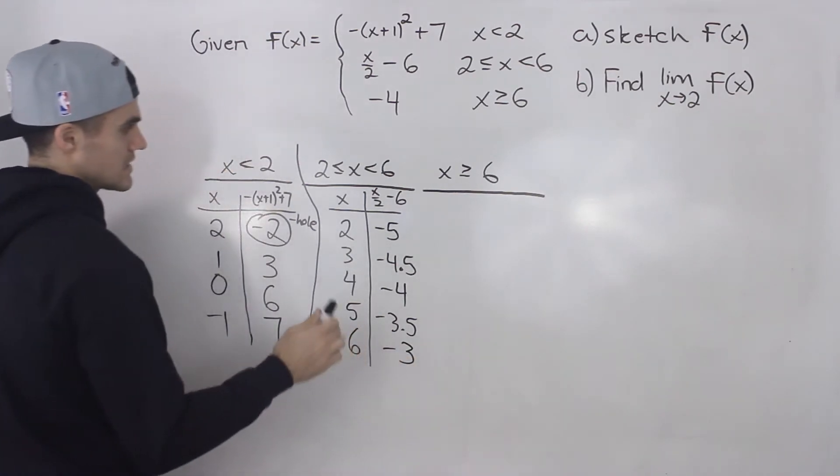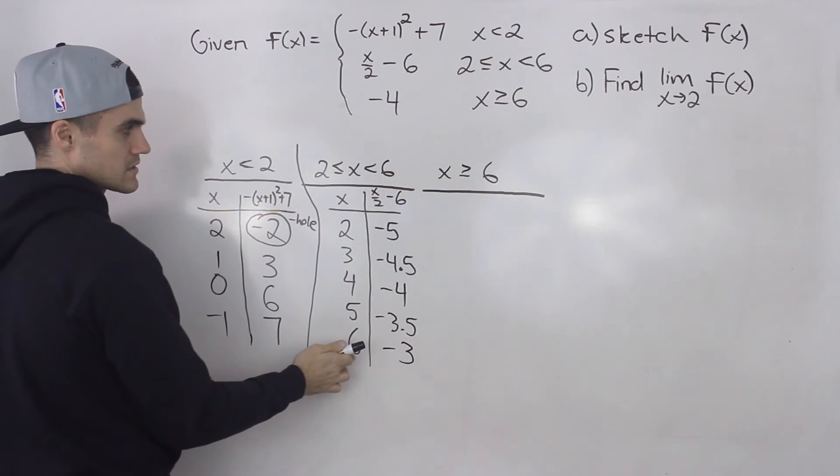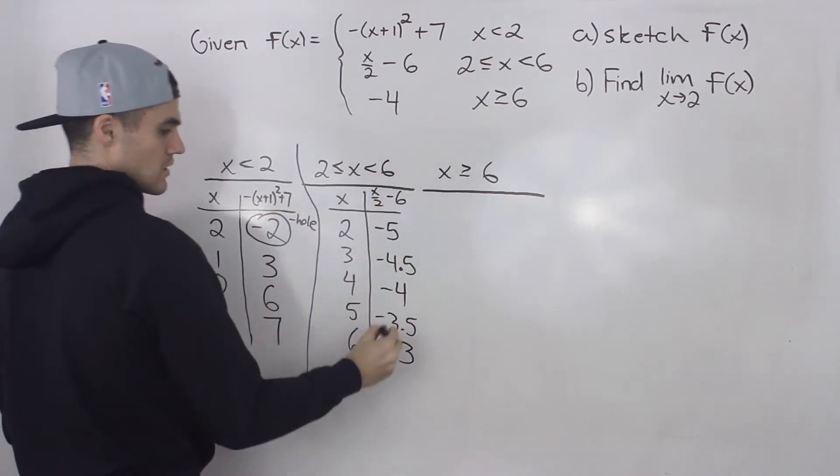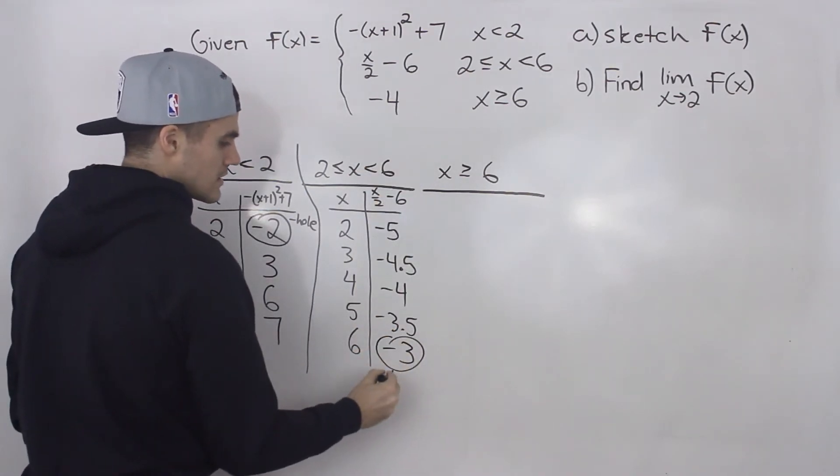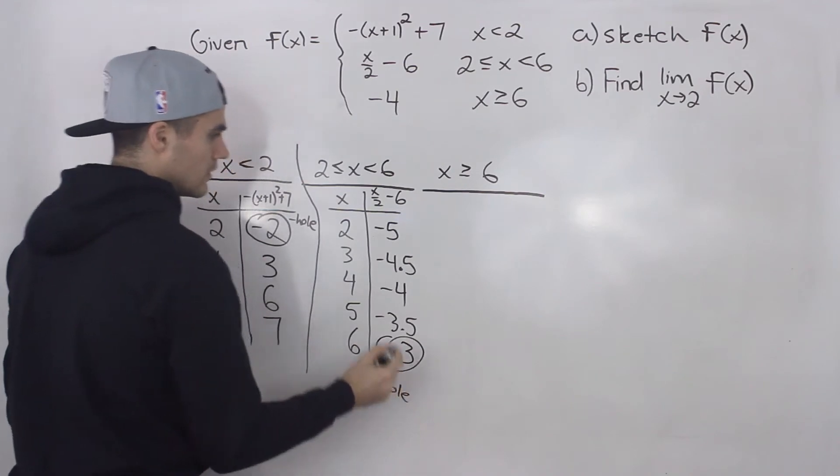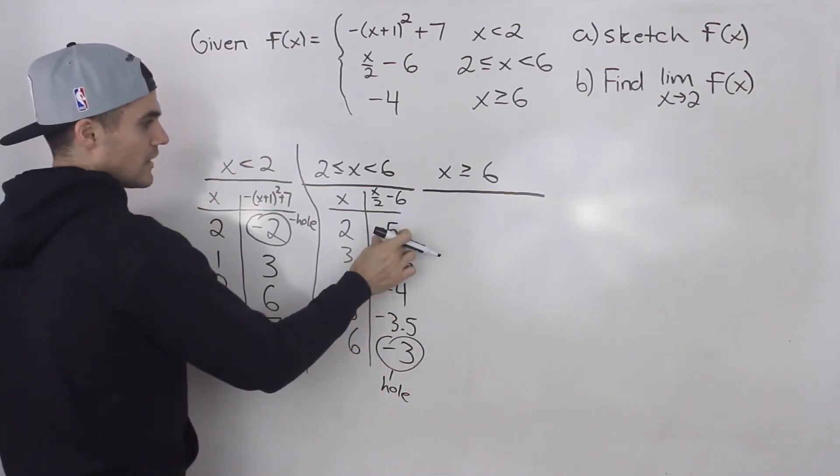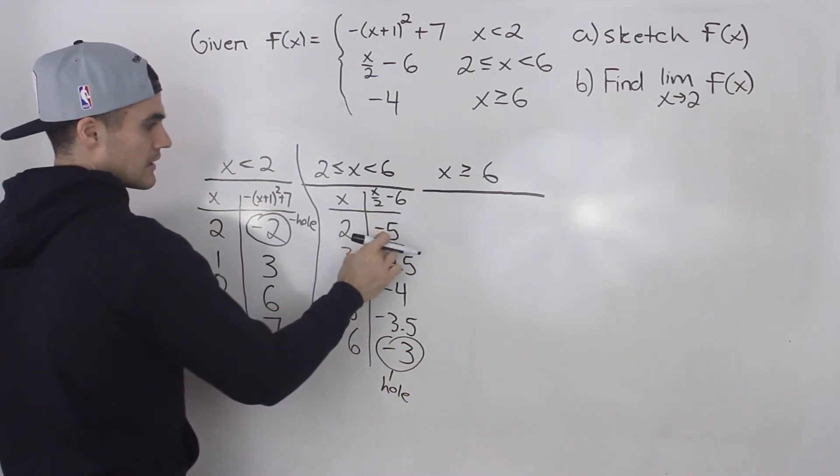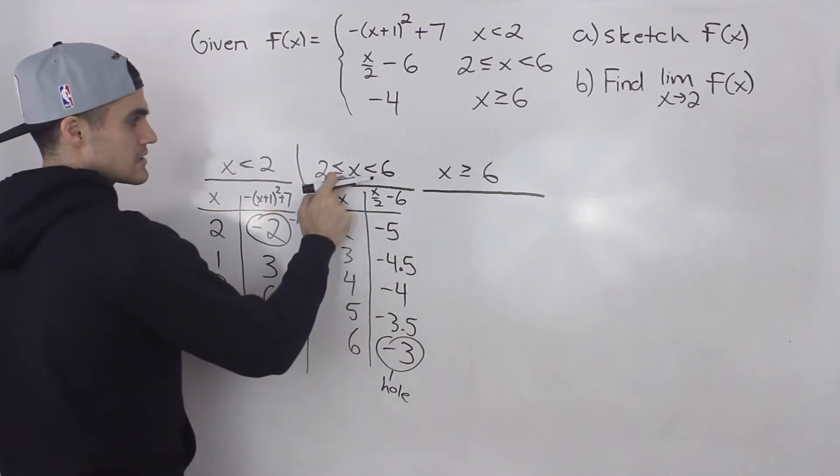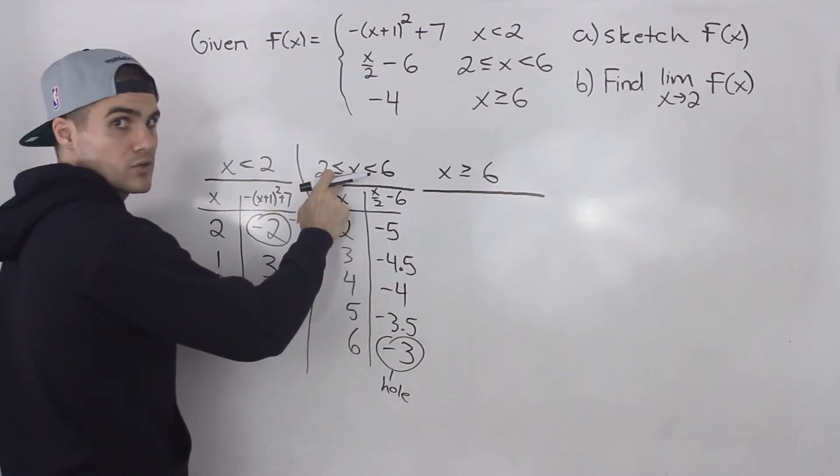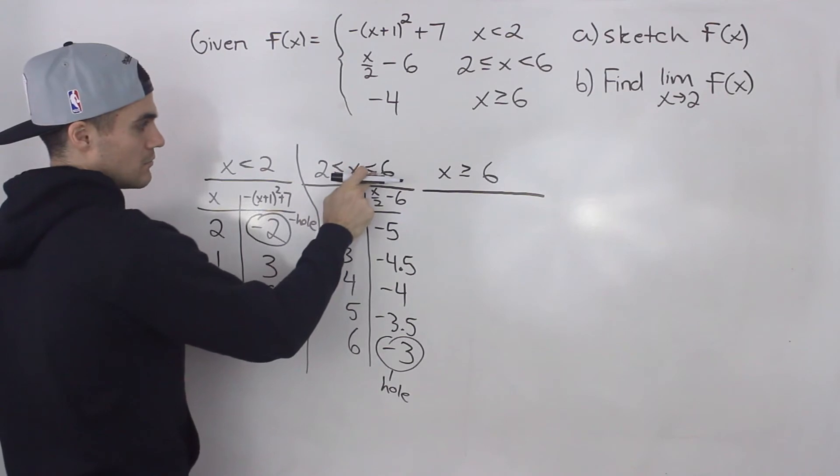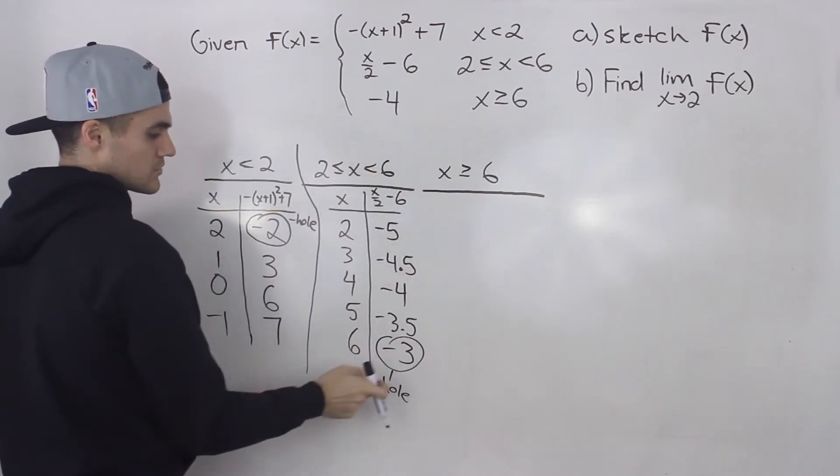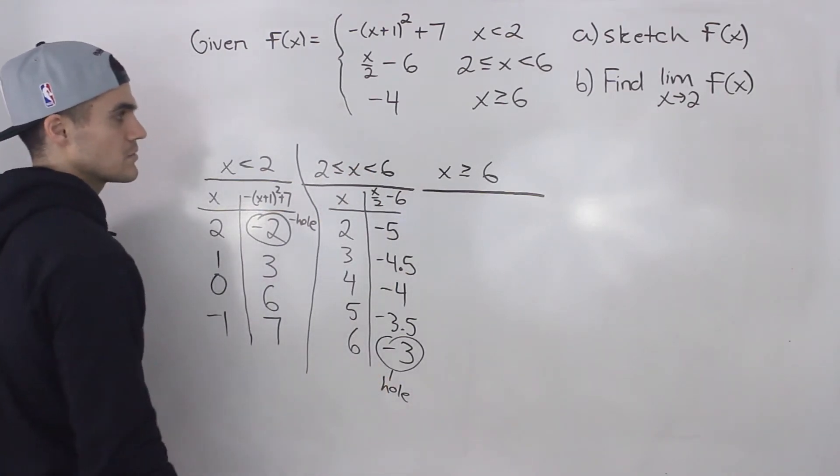And notice that for the x value of 6, it's not defined. So this here is a hole as well. And then this y value of negative 5, it is defined there because it's x is greater than or equal to 2. But this less than 6 is not equal to 6. So that y value is going to be a hole.